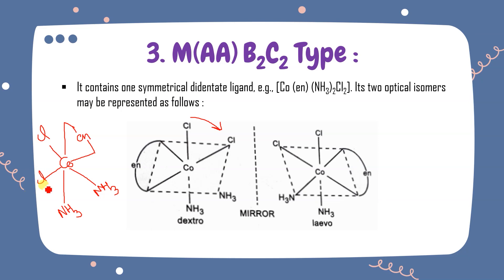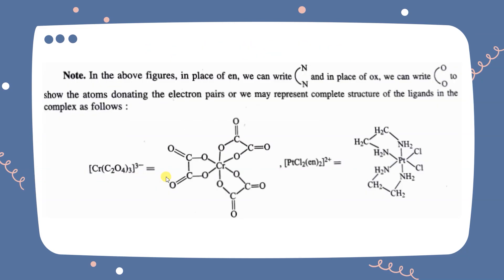Note: in the figures, in place of 'en' we can write N (the donor atom) and in place of 'oxalato' we can write O, to show the atoms donating the electron pair. Alternatively, we may represent the complete structure of the ligand in the complex — showing the metal attached to nh₂–ch₂–ch₂–nh₂ for ethylenediamine and the metal attached to oxalate.